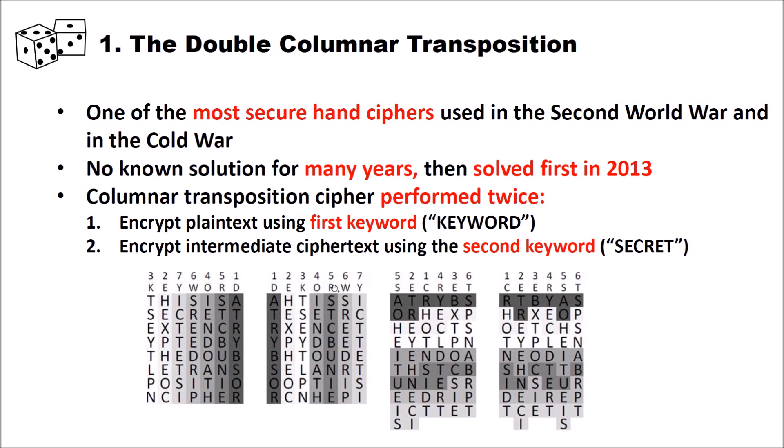You can see here using colors matching the columns how you read it out. Then you write the second keyword 'secret' on top and order it alphabetically — c, e, e, r, s, t — numbered one through six. And you get your final ciphertext by again reading out column-wise.